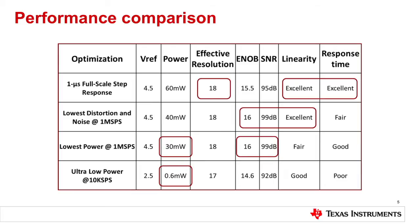The linearity, however, is absolutely superb, as is the response time — clearly that's what it's designed for. If we go to the second one — lowest distortion and noise at 1-megasample per second — power goes down a little to 40 milliwatts, 16 ENOB, 99 dB of SNR, which is much better than the previous case, excellent linearity, but not as good a response time. That is the trade-off.